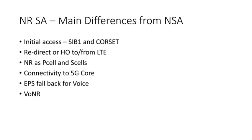In SA, connectivity to the 5G core enables all the slicing benefits. We also have EPS fallback for voice — when VoNR is not implemented, the UE falls back to the LTE network to complete voice calls via VoLTE and IMS. Finally, VoNR is the NR equivalent of VoLTE, delivering voice services natively over the NR network. That concludes this lecture on NSA versus SA NR networks.